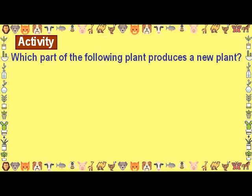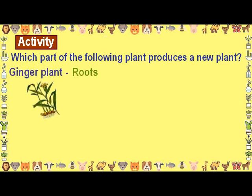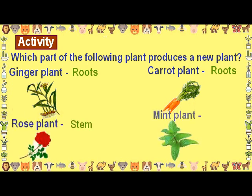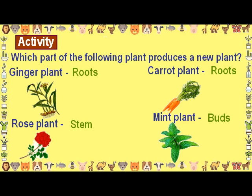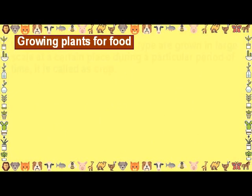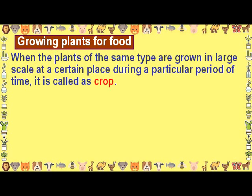Activity: Which part of the following plant produces a new plant? Ginger plant — roots. Carrot plant — roots. Rose plant — stem. Mint plant — buds.